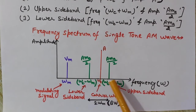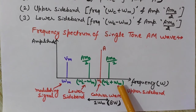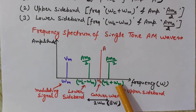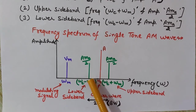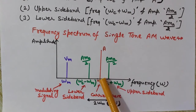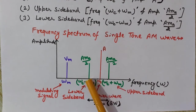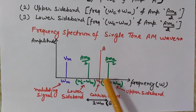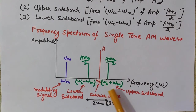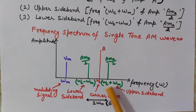In the spectrum, the upper sideband has frequency ωc+ωm, which is ωm more than ωc, and the lower sideband has frequency ωc−ωm. The distance from lower sideband to carrier is ωm, and from carrier to upper sideband is also ωm. Therefore the bandwidth is ωm + ωm = 2ωm. You can also calculate it as (ωc+ωm) − (ωc−ωm) = 2ωm.